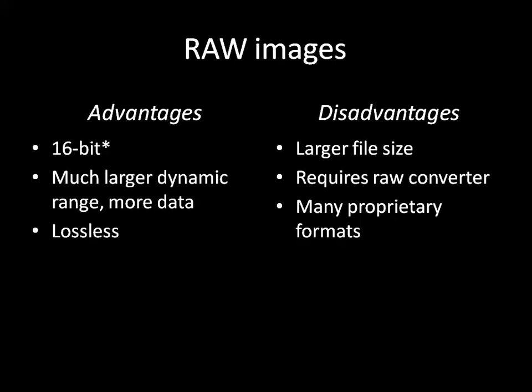RAW files are also lossless — you're working with all of the information captured by the camera. The disadvantage is you're dealing with a larger file size. You need a RAW converter to take that data and convert it into something that looks like an image. And there are many proprietary RAW formats — camera manufacturers seem to want to create a new RAW format for every new camera they produce.